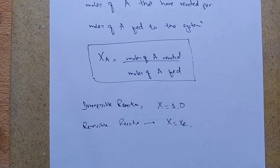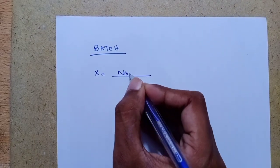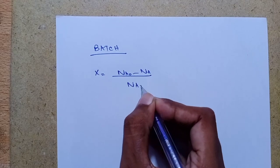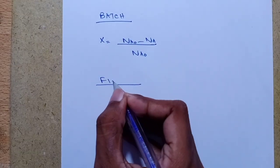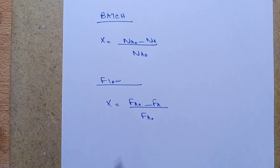In upcoming lectures we will write design equations for batch reactor, CSTR, PFR, and PBR on the basis of conversion. For a batch system, the equation is: X = (NA0 − NA) / NA0. For a flow system, the equation is: X = (FA0 − FA) / FA0. How these equations are derived and generated will be explained in the next lecture.